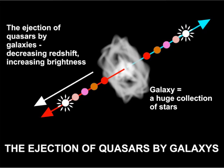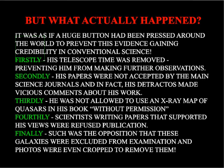Furthermore, as the quasar moved away from the galaxy, their redshift reduced and their brightness increased. So there was clear evidence that redshift was not an indicator of speed of recession, and this should have demolished the Big Bang theory. But what actually happened?